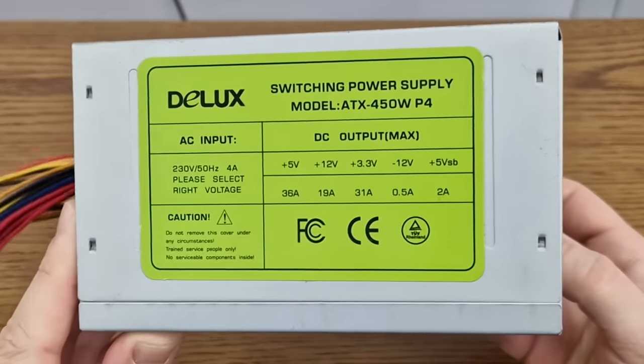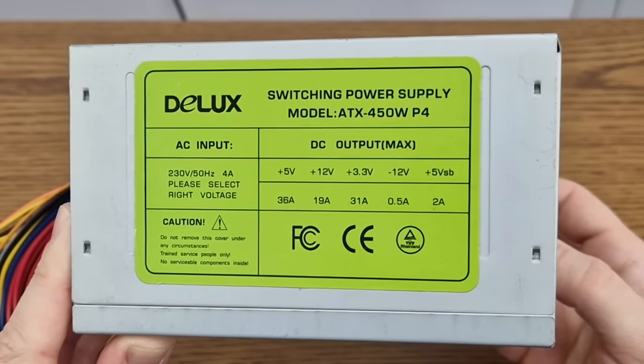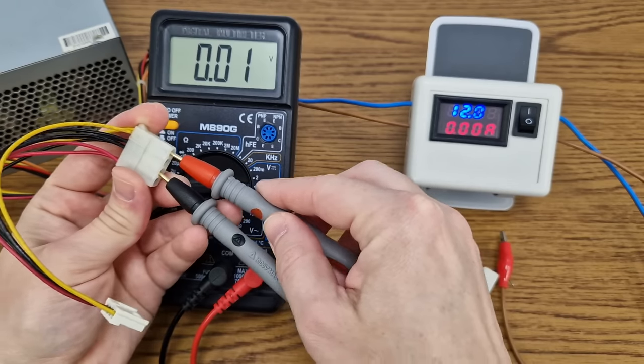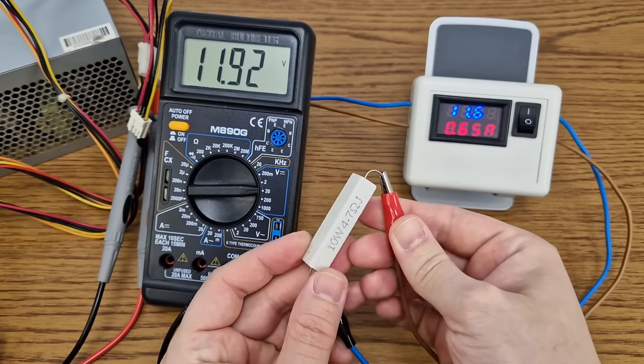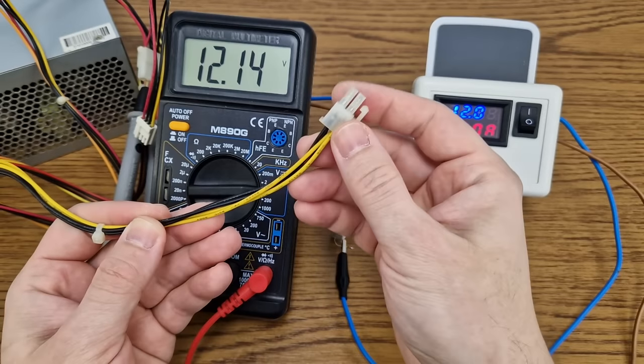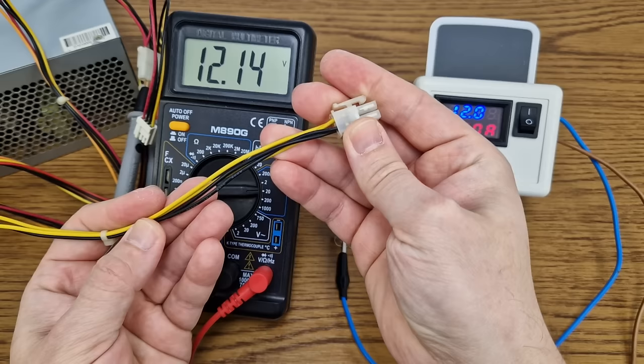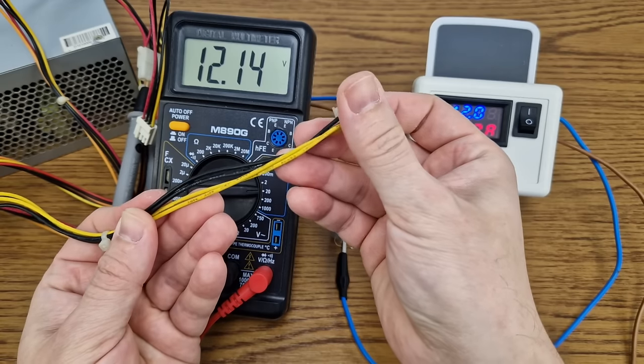On the power rating table it says 19A for the 12V rail, so why is that? Let's measure the voltage on a separate pair of yellow and black wires. The voltage is better. These thin wires cannot carry a lot of amps, so I need to use more of them in parallel or replace them with thicker wires.